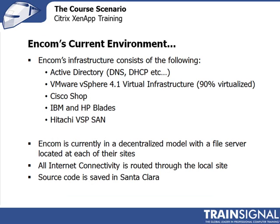Encom's current environment includes Active Directory, DNS, DHCP, etc. They have VMware vSphere 4.1 from a virtual infrastructure standpoint and are 90% virtualized. They're a Cisco shop for networking, with IBM and HP blades for compute resources and a Hitachi VSP SAN for fiber channel. Encom is also currently in a decentralized model with a file server at each site. All internet connectivity is routed through the local site. Source code is saved in Santa Clara but is constantly uploaded, resulting in different copies existing at different sites — which they are trying to avoid.